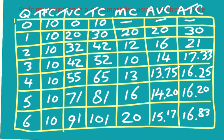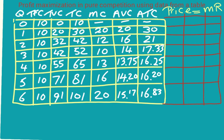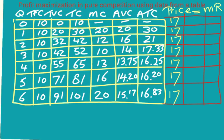To figure out what quantity to produce to maximize profits, we need both cost data and revenue data. We need to know the price of the product. For a firm in pure competition, the price stays constant in the short run, and the price is also the marginal revenue. So let's add price to this table — we'll use a price of $17 all the way down.